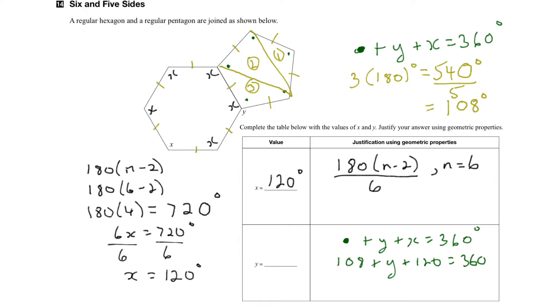So here we can add 108 and 120, so y plus 228 equals 360. Subtracting 228 from both sides, y would equal 132 degrees.